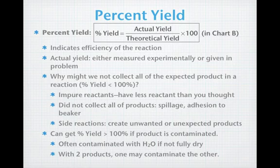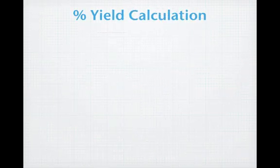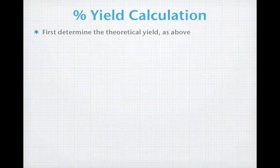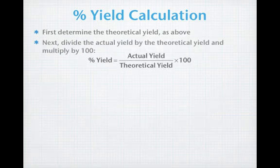Percent yield calculations are actually very straightforward. To calculate the percent yield, as before, first determine the theoretical yield. As I said, you'll be given the actual yield, or you're going to determine the actual yield experimentally, and you just divide the actual yield by the theoretical yield and multiply by 100.